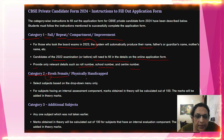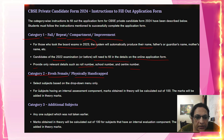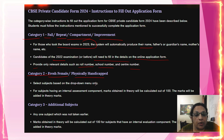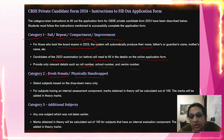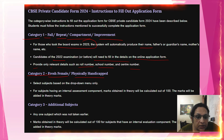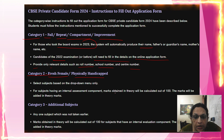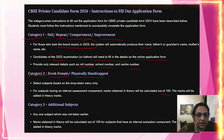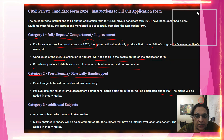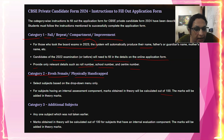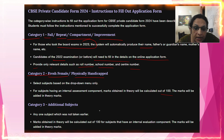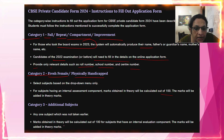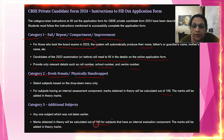Category 2 is Female and Physically Handicapped. Select your subject based on the drop-down menu where you can choose your subject. Subjects may have an internal assessment component, and marks obtained in theory will be calculated out of 100. The third category is additional subjects — any one subject which was not taken earlier, with theory marks also calculated out of 100.